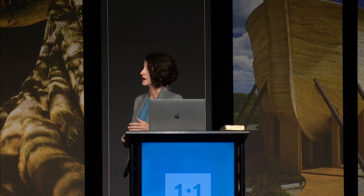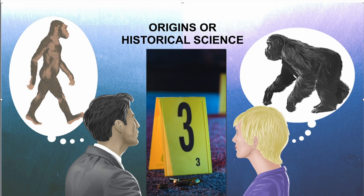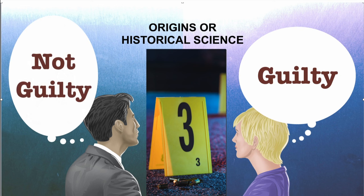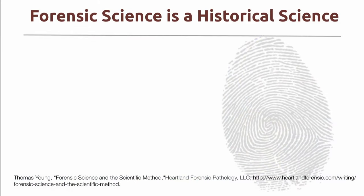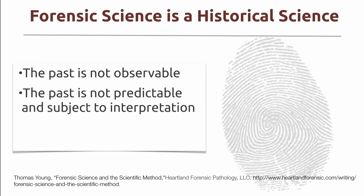If we take a look at historical science — imagine you're looking at evidence from the past, like fossils. Depending on a scientist's worldview or expertise, they can come to different conclusions about that evidence. Two scientists can arrive on a crime scene and come to two different conclusions based on their observational science. Mistakes can be made, because man is sinful and we are not perfect. Forensic science is inherently a historical science because the past is not observable, not predictable, and is therefore subject to interpretation. It is impossible to recreate the past.